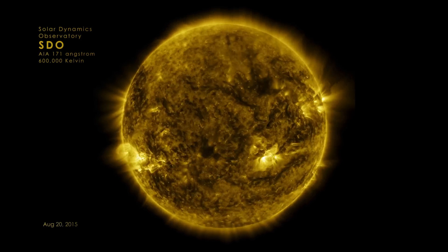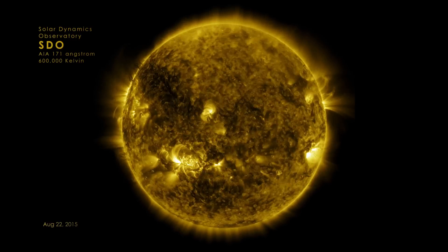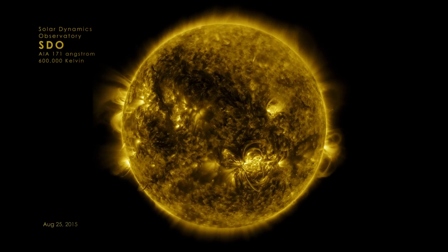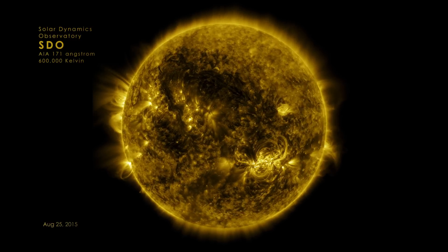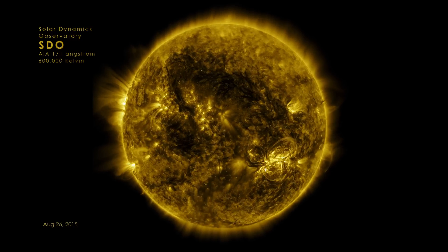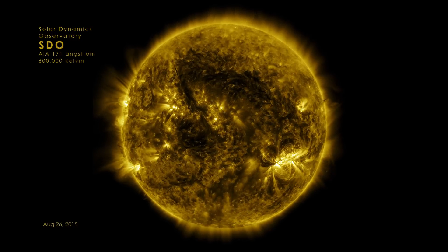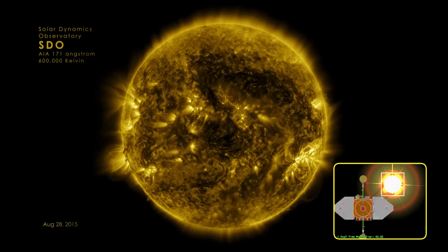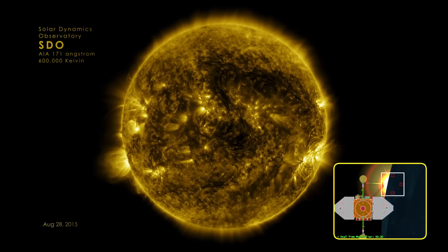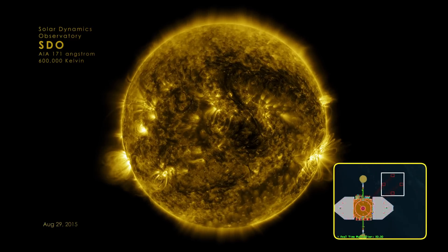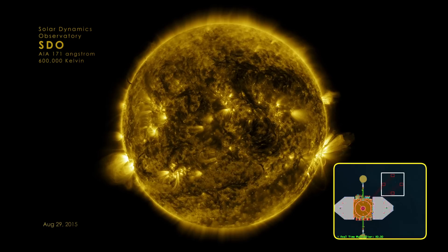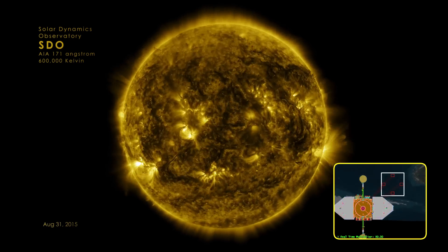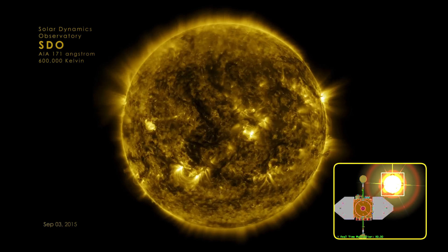When we see the frames go dark, that's eclipse season — that's when the Solar Dynamics Observatory, which is orbiting the Earth, goes behind the Earth, and the Earth is between the Solar Dynamics Observatory and the sun. And so the Earth eclipses the images.